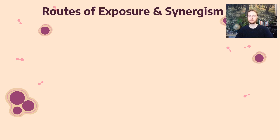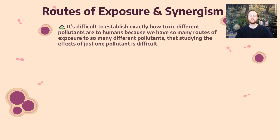Before we talk about specific instances of diseases linked to pollution, we have to talk about the concepts of routes of exposure and synergism. It's difficult to establish exactly the effect of one specific pollutant or toxicant, because humans are exposed to so many different toxicants and pollutants. We have to understand basic routes of exposure as we consider what are the effects of a given toxicant or source of pollution to human health.